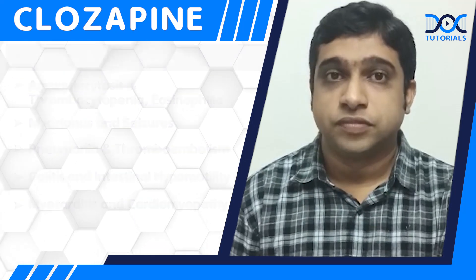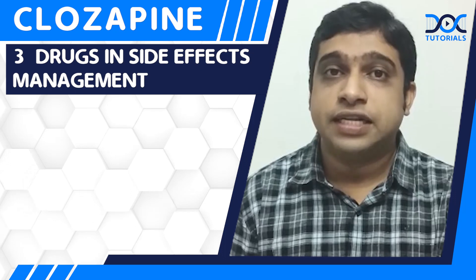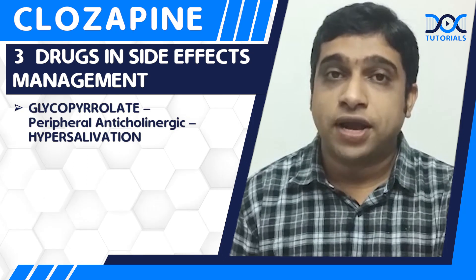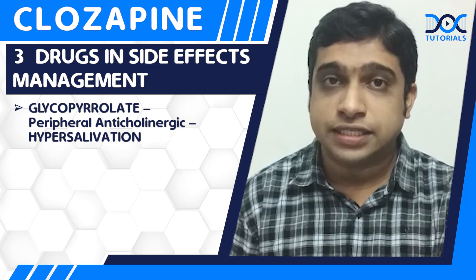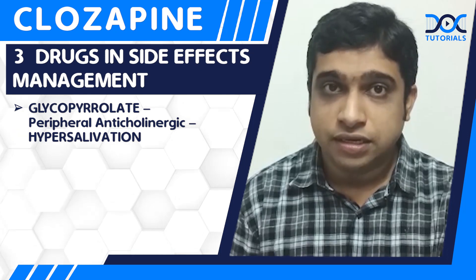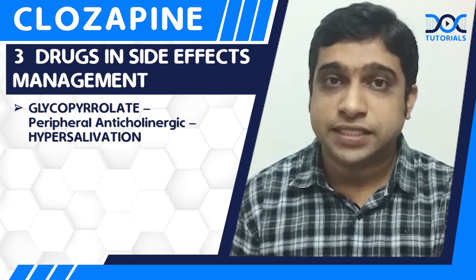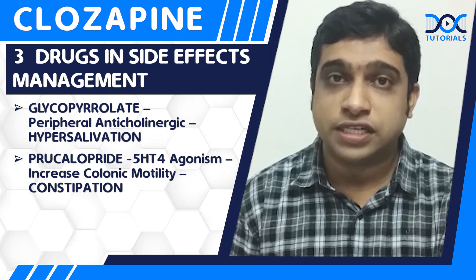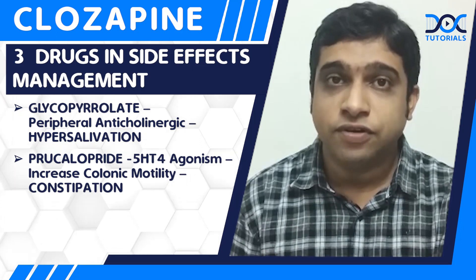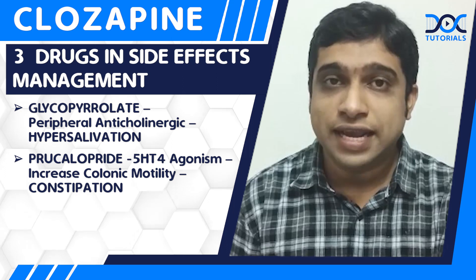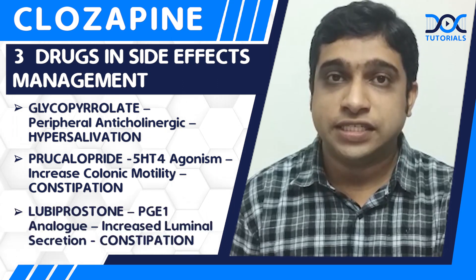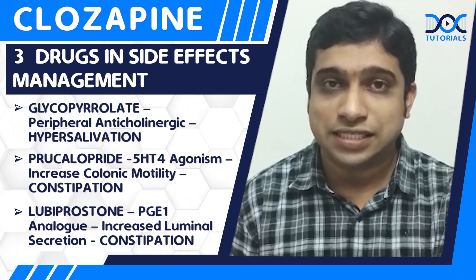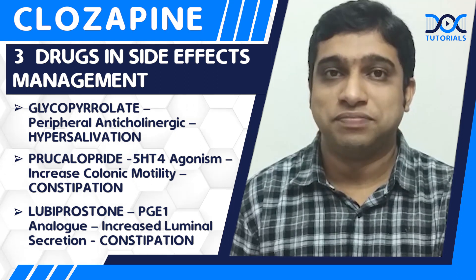Three drugs are important in the management of side effects. One is glycopyrrolate, which is a peripheral anticholinergic used for hypersalivation. For constipation, two drugs are used: prucalopride, which is a 5-HT4 serotonin receptor agonist that increases colonic motility, and lubiprostone, which is a PGE1 analog that increases luminal secretion.